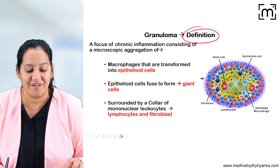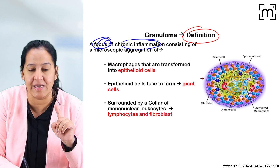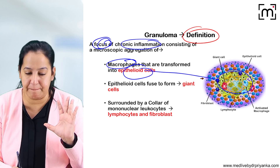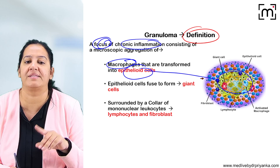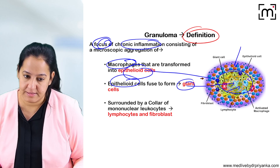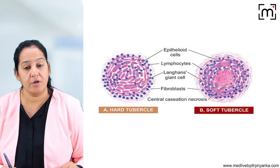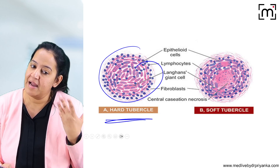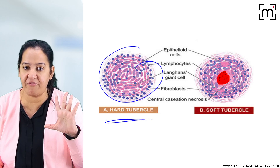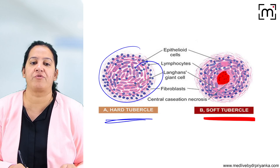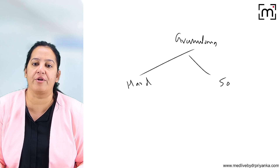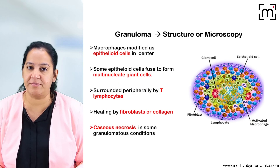The definition of granuloma: it is a focus seen in chronic inflammation in which macrophages are transformed into epithelioid cells forming the center, along with giant cells (formed by fusion of epithelioid cells). The collar is formed by T lymphocytes and fibroblasts. There are two types of granuloma: hard granuloma (hard tubercle) — a typical granuloma with no central necrosis — and soft granuloma (soft tubercle) — which has caseous necrosis at the center.